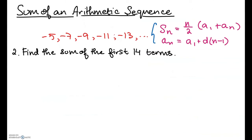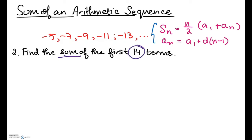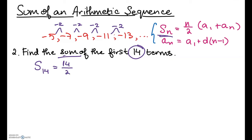For our next example, we're given the sequence -5, -7, -9, -11, -13, and it continues. We are asked to find the sum of the first 14 terms. This is an arithmetic sequence because we're constantly subtracting 2 (or adding -2) to get from one term to the next. Using our formula: S of 14 equals 14 over 2 times a of 1 plus a of 14.